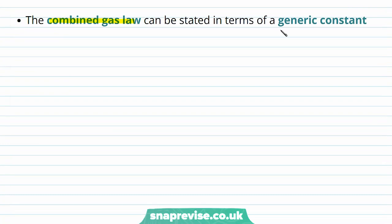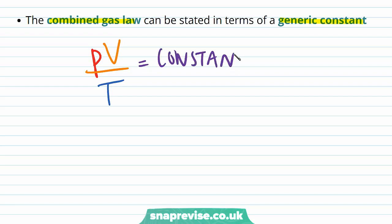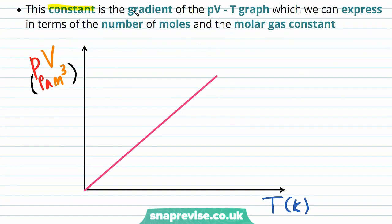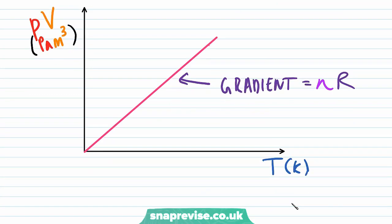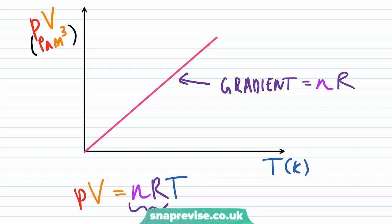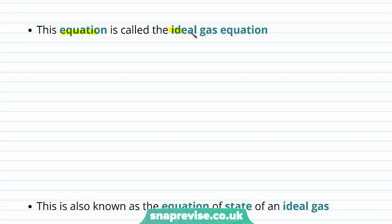We already know that we can state the combined gas law as pressure times volume divided by temperature equals a constant, which rearranges to pressure times volume equals a constant times temperature. That constant is the gradient of the pressure-volume against temperature graph, which we can express as n times R. So we can rewrite the combined gas law as PV = nRT, replacing the generic constant. This equation is known as the ideal gas equation.